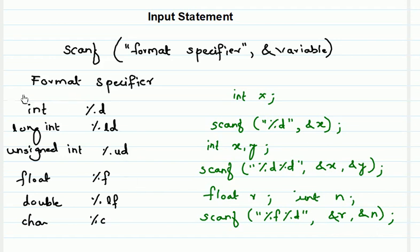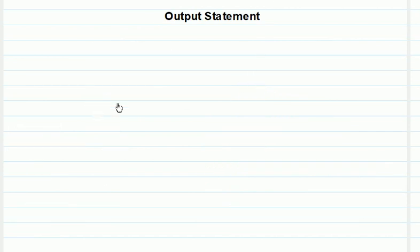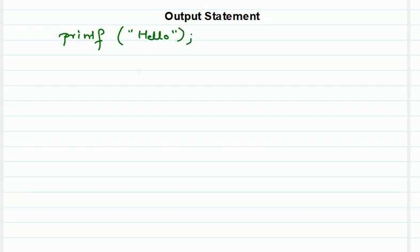Now let us see the output statement. As mentioned, printf is the function used to print output. The printf function can print fixed text as well as variable values. To print fixed text, you simply specify your text in double quotes inside printf — for example, printf("Hello") — and it gets printed as it is.